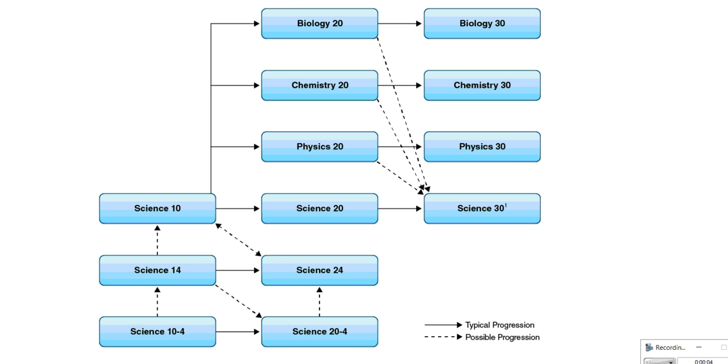Here's the information for the science courses at high school level. If your overall mark is below 50% in Science 9, you will be enrolled in Science 14.